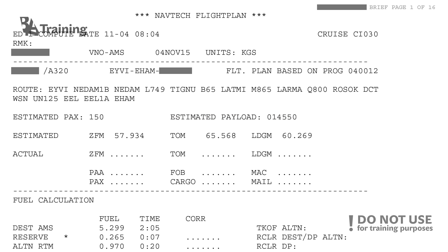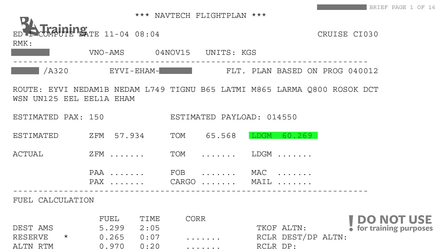We also see the zero fuel mass, which is the weight of the aircraft with passengers and cargo but without fuel. Then there is the takeoff mass — the mass at which the aircraft will be taking off, including fuel, passengers, and everything else. Finally, there is the landing mass, which is another important figure; we must ensure it does not exceed the maximum landing weight of the aircraft. In this case it looks good, as we have four tons of extra margin without risking structural damage, meaning the captain can also take some extra fuel if needed en route.